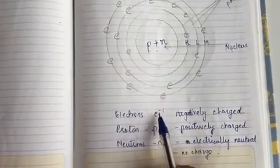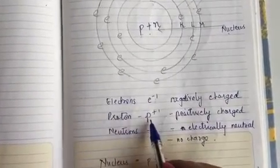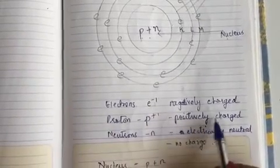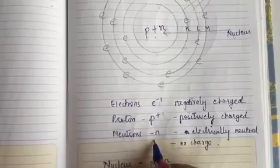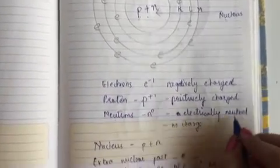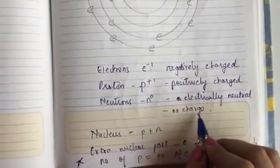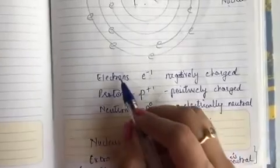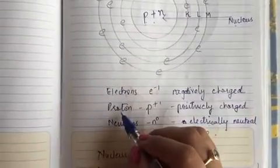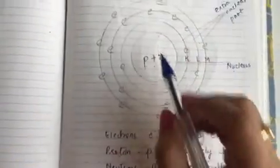Electrons are denoted as e⁻¹, where minus 1 denotes it is negatively charged. Protons are denoted as p⁺¹, which denotes that protons are positively charged. Neutrons are denoted as n⁰, which means neutrons are electrically neutral — meaning they do not have any charge. Important: in an atom, the number of electrons equals the number of protons.